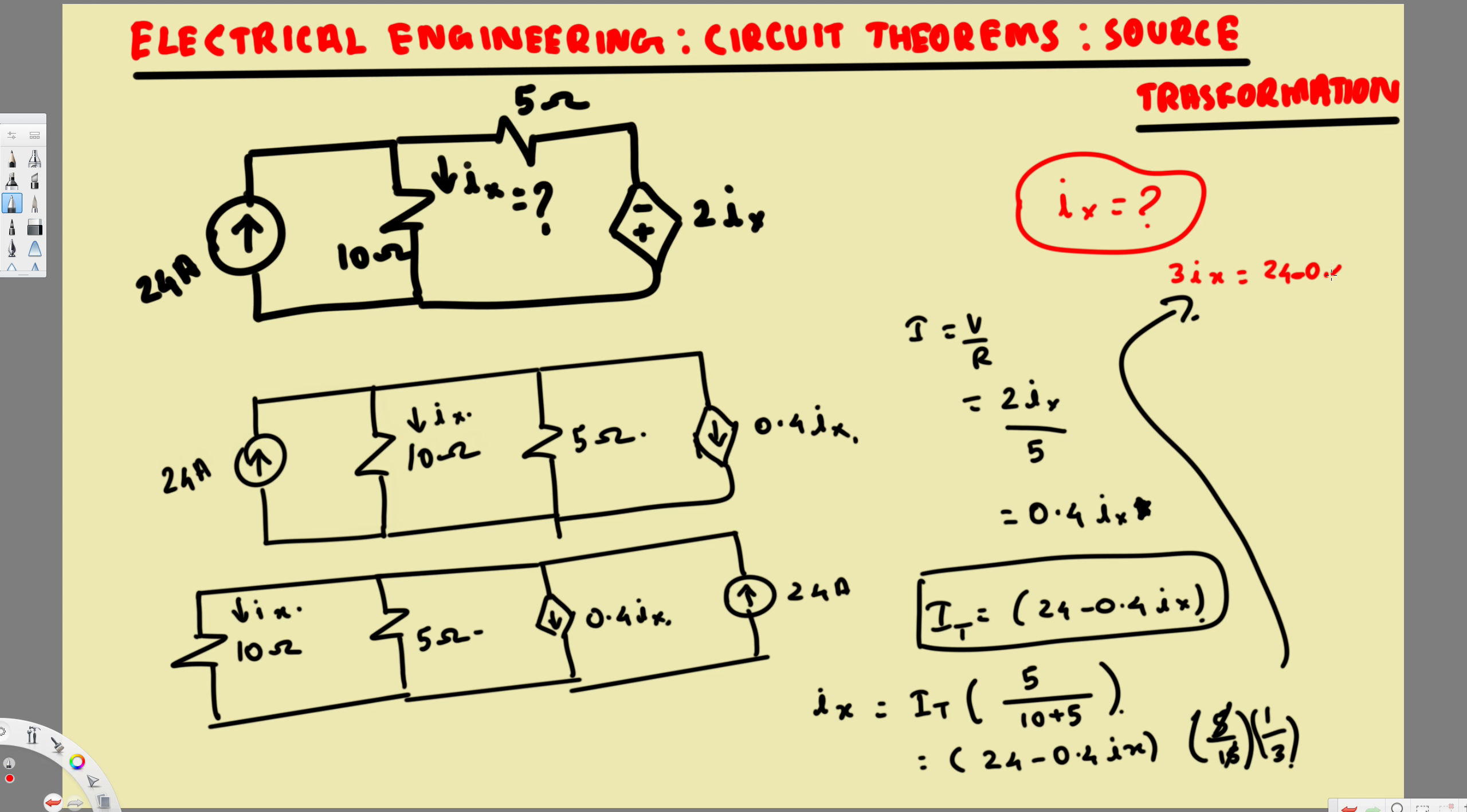24 minus 0.4Ix. Now to get rid of the 0.4, I can multiply both sides by 10, so this is going to be 30Ix equals 240 minus 4Ix.